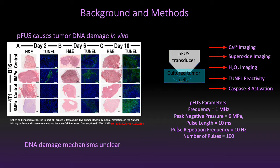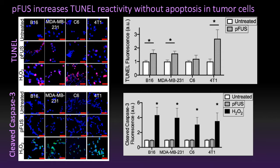Here are our parameters listed below. The first thing I tested for was whether in these cell culture models we would get TUNEL reactivity and apoptosis. We got TUNEL reactivity in most of our cell lines but did not get apoptosis in any. The cell lines tested were the B16 melanoma, MDA-MB-231 breast cancer, 4T1 breast cancer, and C6 glioma. In every line except the glioma we did get DNA damage, but we did not get apoptosis in any of our lines, as seen from both the images and the graphs.